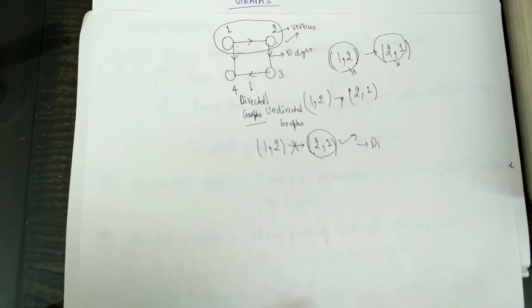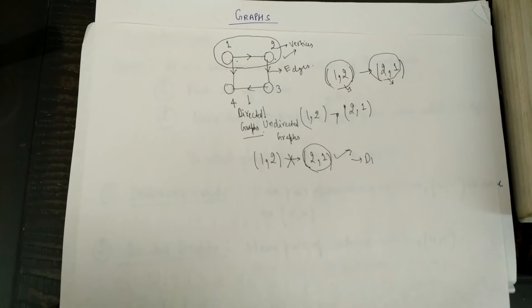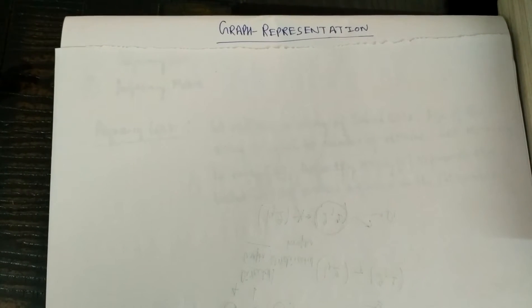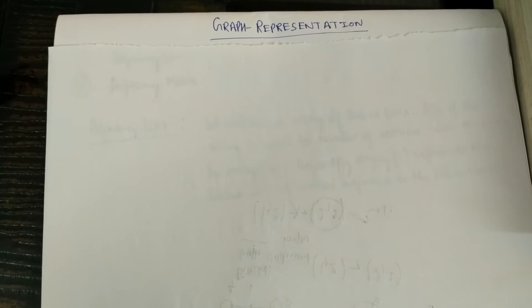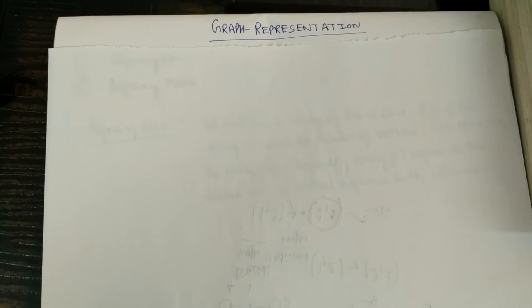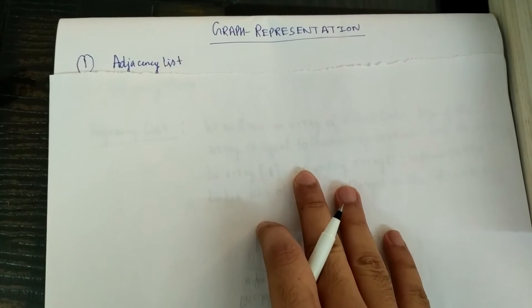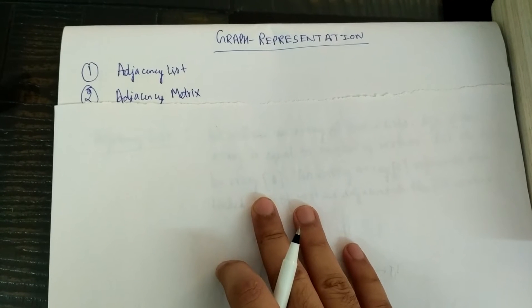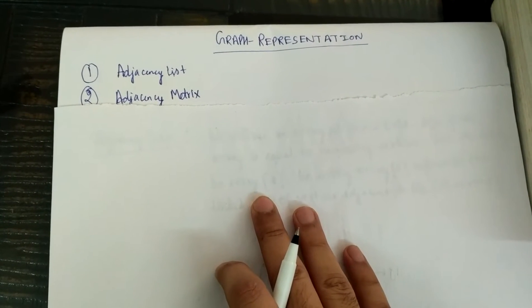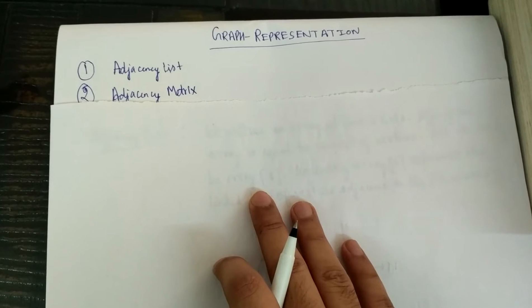Now we will see the representation of graphs — how we can represent a graph. We can represent a graph with the help of two methods: first, with the help of an adjacency list, and second, with the help of an adjacency matrix. In this video, we will be seeing how we can represent a graph using an adjacency list.